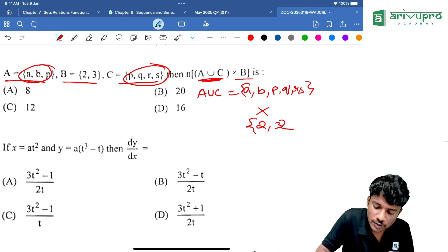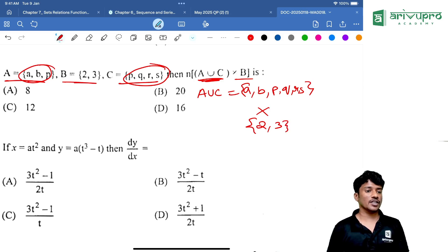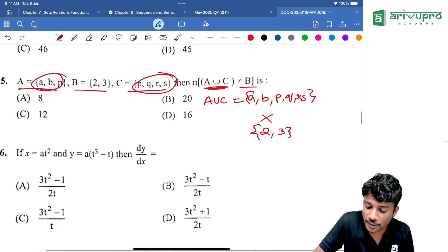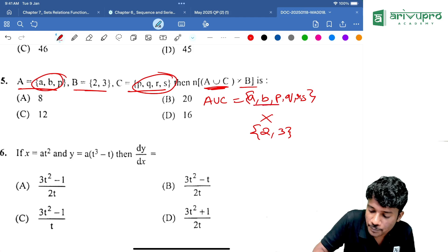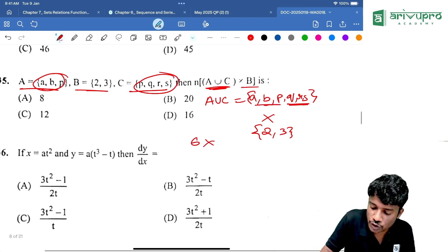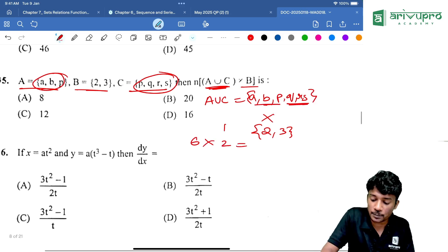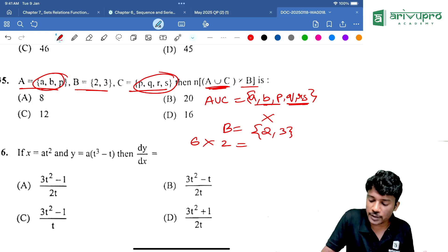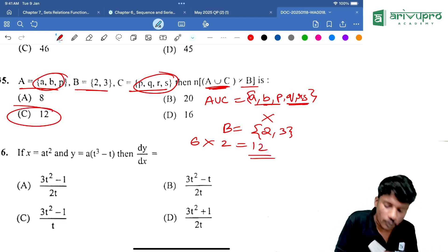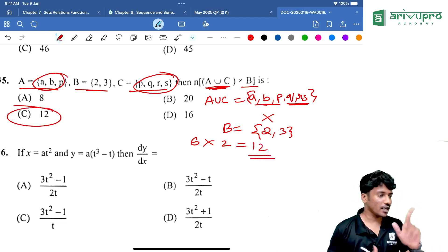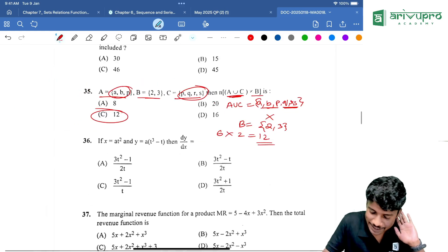Now, the question is N of cardinal number they are asking. So, what is the cardinal number? Nothing but number of elements. 6 elements are there. 6 into 2 is how much? How many elements are there in B? B is equal to 2. That means 6 into 2 is 12. Option C is the answer. Understood people? Yes. Next question.